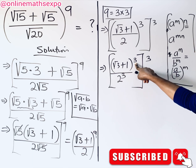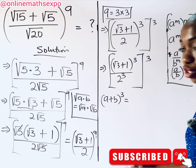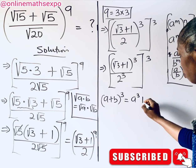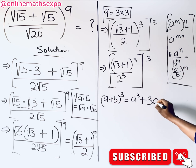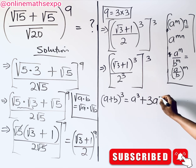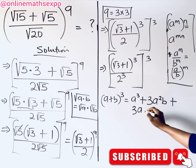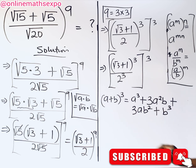This is a binomial of degree 3. Remember: (a + b)^3 = a^3 + 3a²b + 3ab² + b^3. You cube the first term, then introduce coefficient 3 with a² and b, then 3 with a and b², and finally b^3.